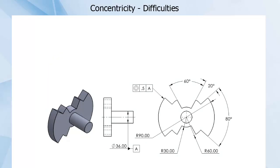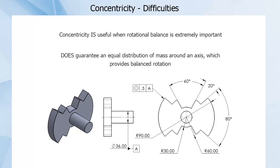One of the few times concentricity might be what you want is when rotational balance is important, such as the flywheel or automotive camshafts. One thing concentricity does do is guarantee an equal distribution of mass around an axis, which provides balanced rotation.